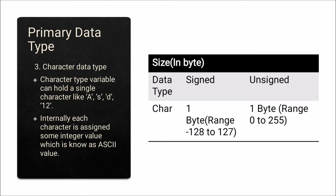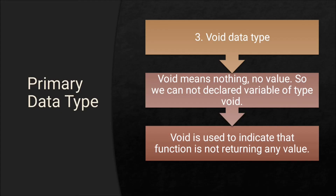The next is character data type. A character type variable can hold a single character like A, S, D, or a digit character. Internally, each character is assigned some integer value which is known as its ASCII value — so if you store 'A', internally it allocates the ASCII value of A. The size of character data type is 1 byte; for signed its range is minus 128 to 127, and for unsigned it is 0 to 255.